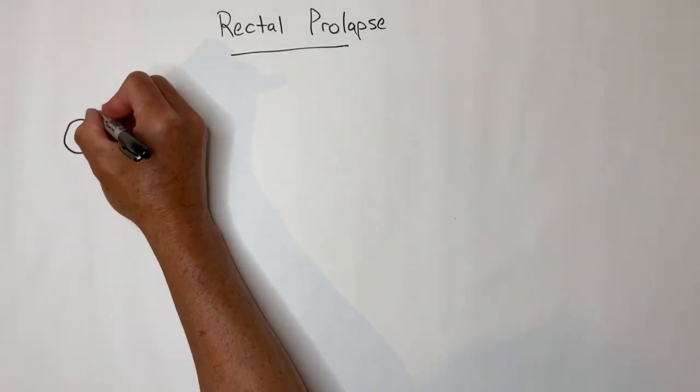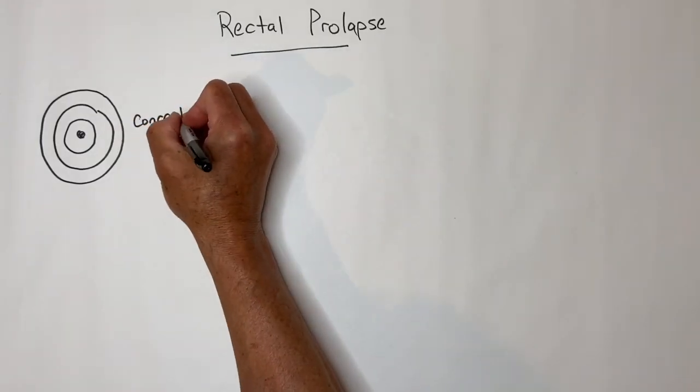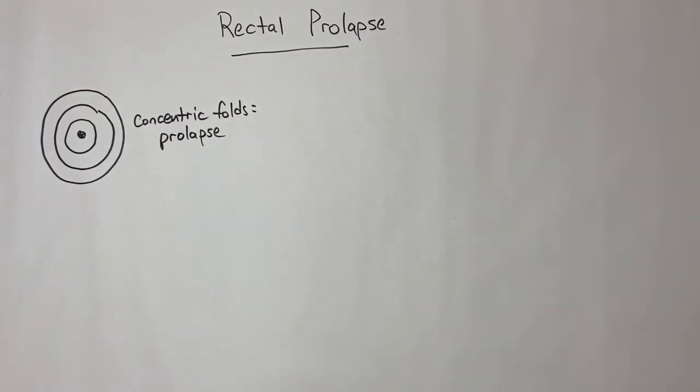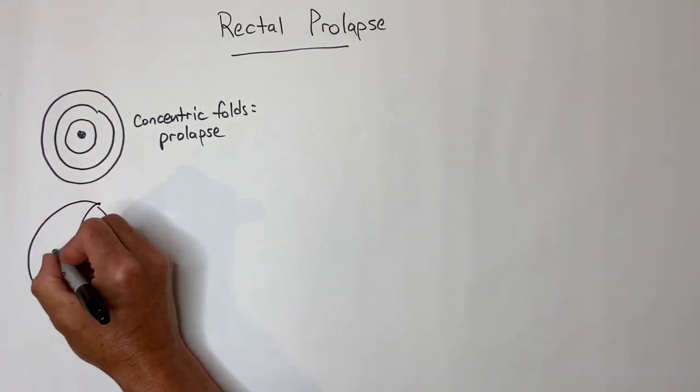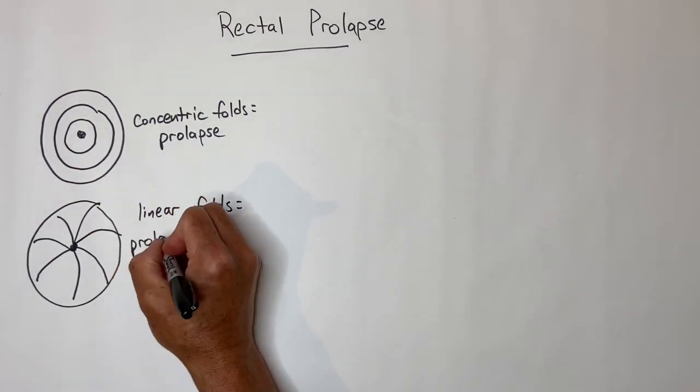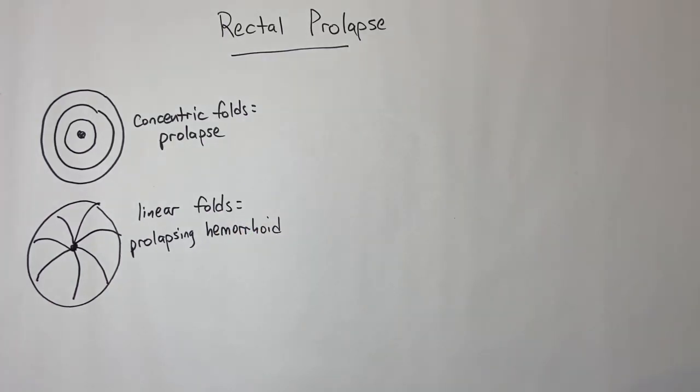Next, rectal prolapse. Rectal prolapse is more common in elderly women. The classic question is that there are concentric folds that differentiate rectal prolapse from the linear folds in a prolapsing hemorrhoid.